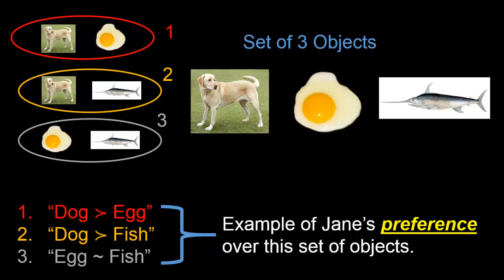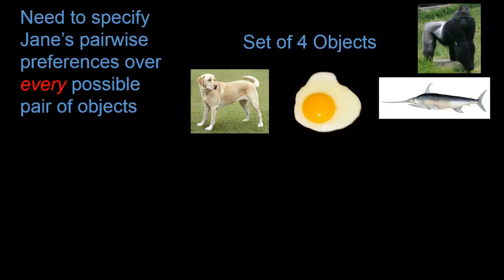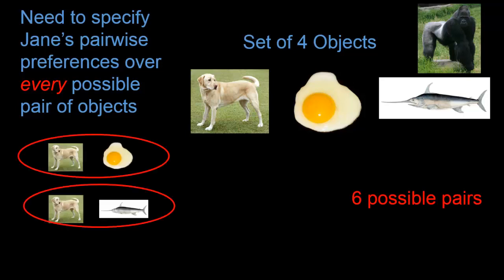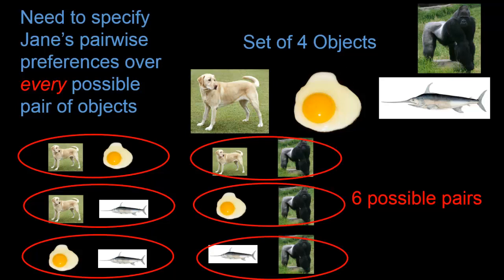Now let's suppose that instead of just having a set of three objects, we throw in an additional object — a gorilla. So now there's a set of four objects. How might we specify Jane's preference over this set of four objects? We just need to specify Jane's pairwise preference over every possible pair of objects. With four objects, there are going to be six possible pairs: dog and egg, dog and fish, egg and fish, dog and gorilla, egg and gorilla, and fish and gorilla.